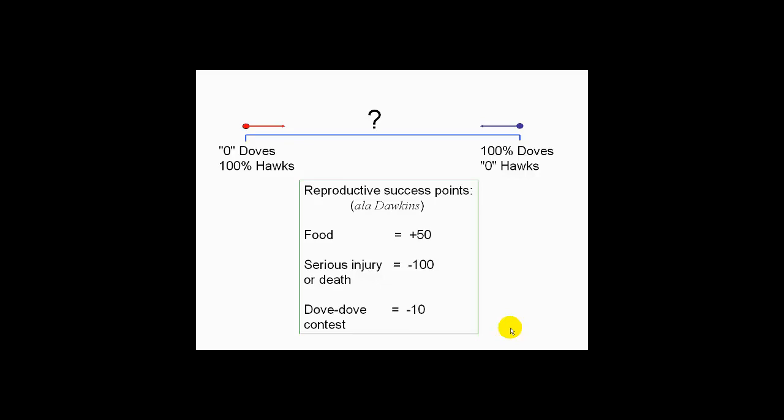How much the population shifts depends upon the payoffs. Dawkins proposes a reproductive success point system: if you get food out of an encounter, it's worth plus 50; if you get serious injury or death, it's minus 100; and the cost of a dove-dove encounter — because they posture back and forth and waste time — is minus 10. I would have also included some negative points for a hawk-hawk encounter since they're really fighting, but Dawkins doesn't do that, so I won't either.